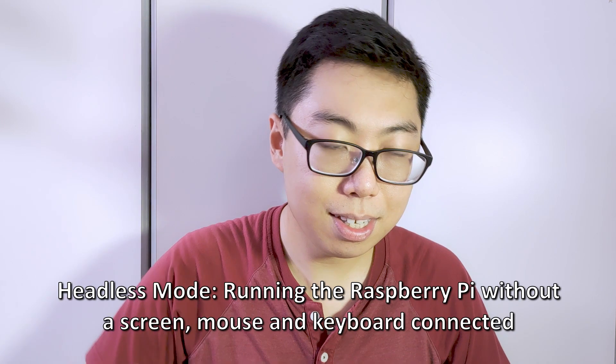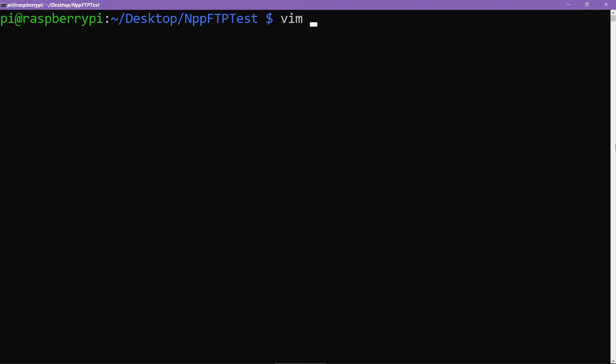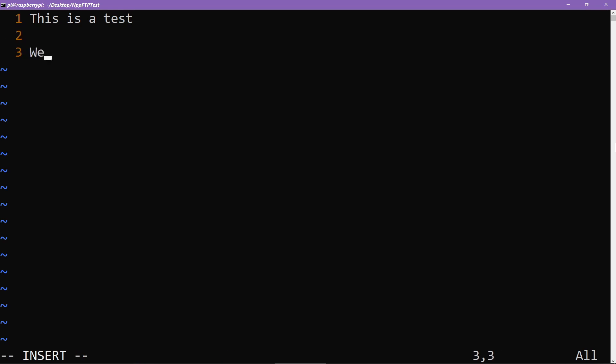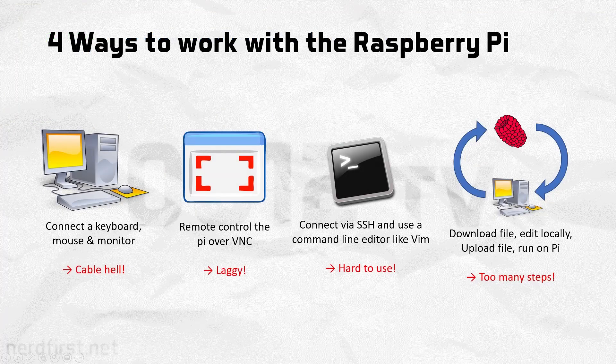The only thing that was still not quite seamless was working with files on the Pi itself. I would either have to use a text editor via the SSH console like Vim, which is not the most user-friendly thing in the world, or I would have to use an FTP client to download the file, edit it on my local machine, and then re-upload it — which is a couple of extra steps. However, with this plugin in place, I don't have to worry anymore because I can just connect, write whatever code I want, and in my console, run it. It's perfectly seamless, almost as if I was doing something on my local machine.